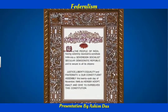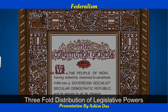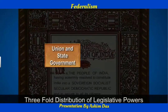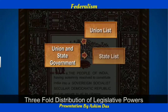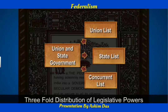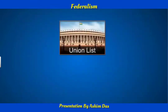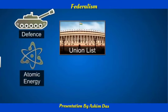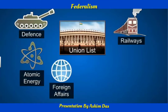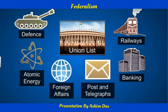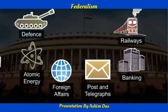The constitution provides a three-fold distribution of legislative power between the central and state governments through three lists: the union list, state list, and concurrent list. The union list includes 97 subjects of national importance, such as defense, atomic energy, foreign affairs, railways, banking, and posts and telegraphs. These matters need a uniform policy throughout the country, and laws on these subjects can solely be made by parliament.